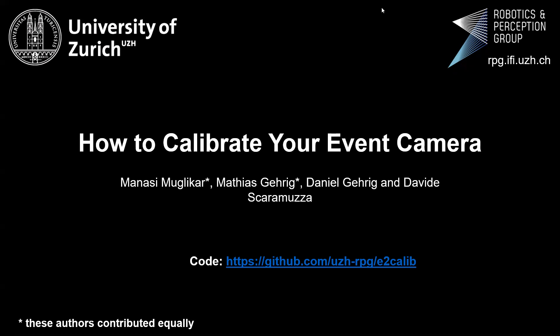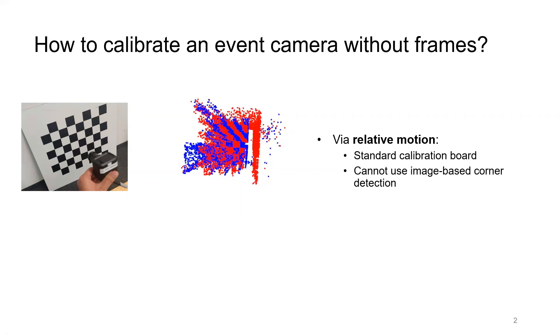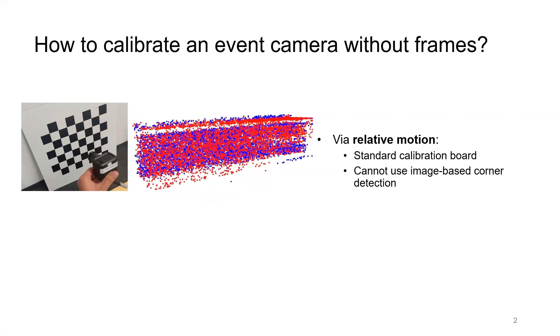Welcome to our presentation on how to calibrate your event camera. Event cameras are asynchronous sensors that pose a paradigm shift in the way visual information is acquired. Due to the asynchronous property of events, image-based corner detection does not apply to event data.